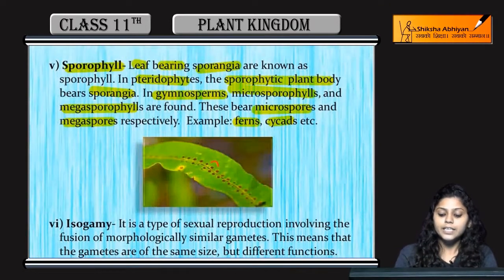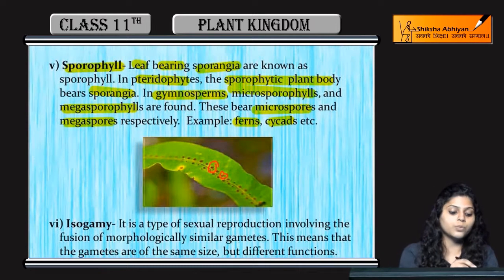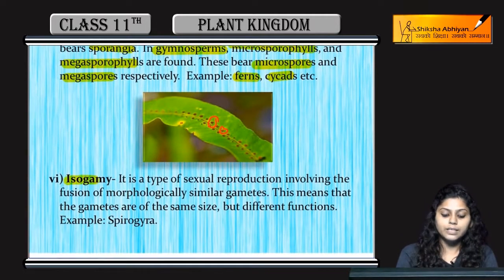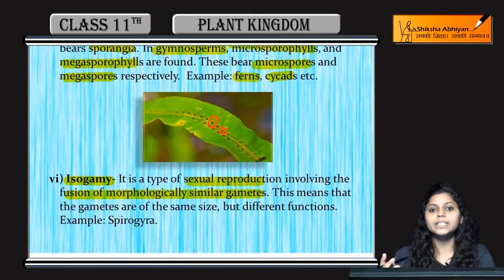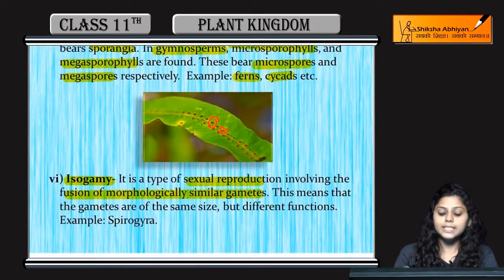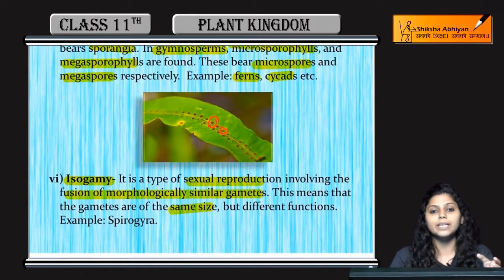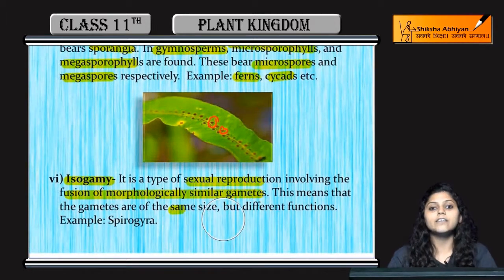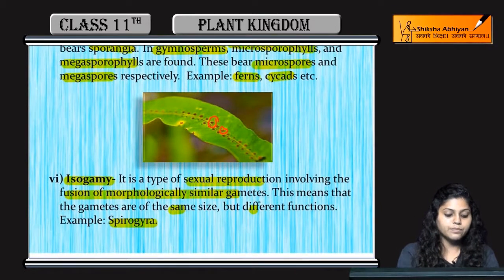Examples of sporophylls include ferns and cycads. In the leaf shown, the circular structures are sori, which bear sporangia, from which spores are produced. Next is isogamy. Isogamy is sexual reproduction that involves the fusion of morphologically similar gametes — meaning their appearance is similar, they look alike and are of the same size. Since they look the same, you cannot tell which is the male and which is the female gamete, but their fusion still occurs.